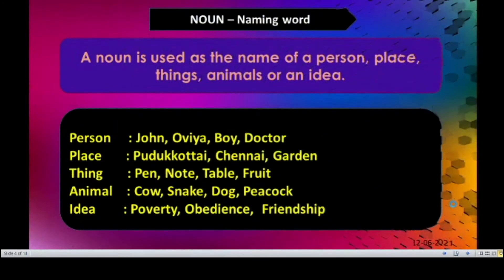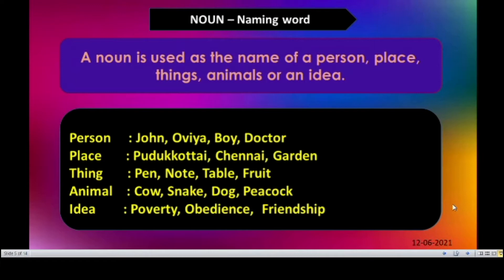The first part of speech: Noun. Noun is a naming word. A noun is used as the name of a person, place, things, animals, or an idea. Example — names of persons: John, Obia, boy, doctor. All these are names of persons.